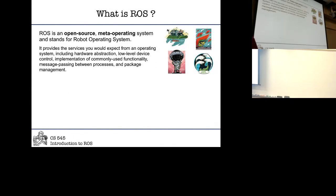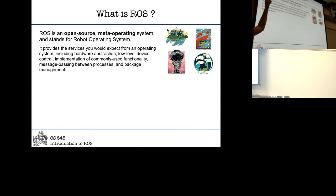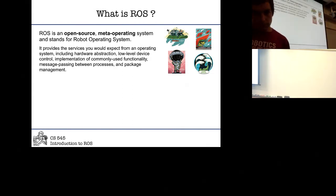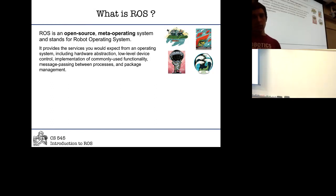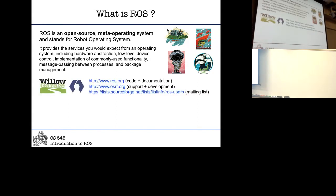A little bit about the history. ROS comes in distributions, similar to how Ubuntu comes in releases. Every half year they call a set of core packages a new name. It started with Box Turtle, then Sea Turtle, then Diamondback — they like turtles and always increment the letter A, B, C, D. Now it's Hydro Medusa. ROS provides services that you would expect from an operating system. The reason it was so successful is because a company — Willow Garage — generously employed a bunch of people to push this open-source software. Now OSRF is the new foundation that has taken over with funding and support.